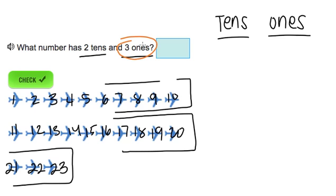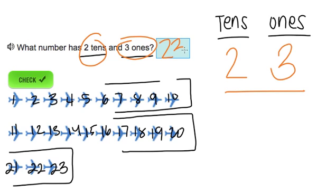And how many tens do we have? We have two tens. So we have twenty-three. The number twenty-three has two tens and three ones.